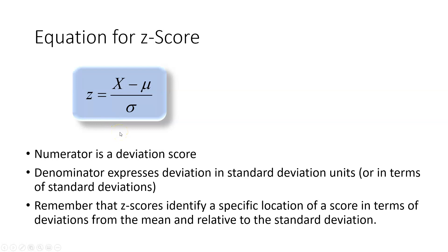The equation for computing a z-score is: z equals x minus the mean divided by the standard deviation. The numerator of this equation is a deviation score — remember from our last module that deviation scores tell us how far away a score is from the mean. The denominator expresses that distance in terms of standard deviation units.